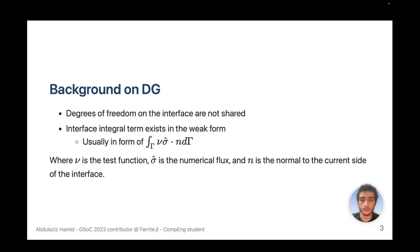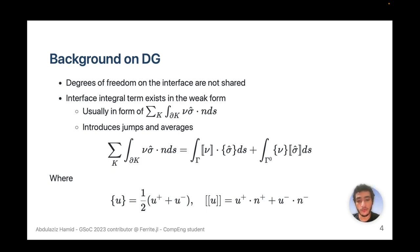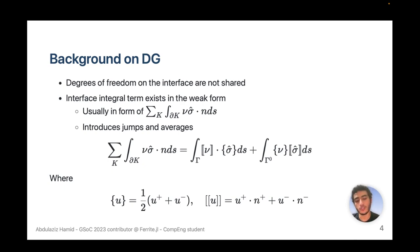This introduces the concept of jumps and averages, because the interface integral term can be expressed as a summation of two integral terms: one over all the faces of the grid and the other over all the interfaces of the grid on which the solution is not well defined. On those interfaces we have a jump and an average.